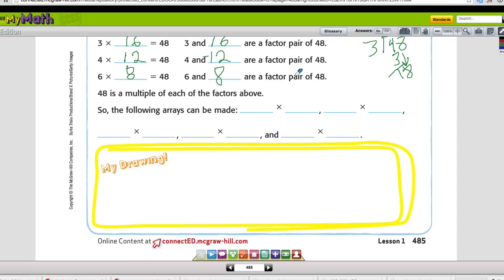Then it says 48 is the multiple of each of the factors above, so the following arrays could be made. We had 1 and 48. We had 2 and 24. We had 3 and 16. We had 4 and 12. And 6 and 8.